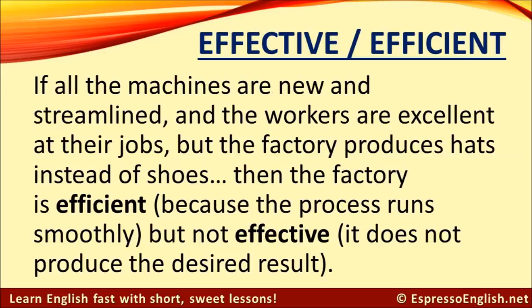Now let's consider the other situation. If all the machines in the factory are new and streamlined, and the workers are excellent at their jobs, but the factory produces hats instead of shoes, then the factory is efficient because the process runs very smoothly, but it is not effective. It does not produce the desired result — it's producing the wrong product, in fact.